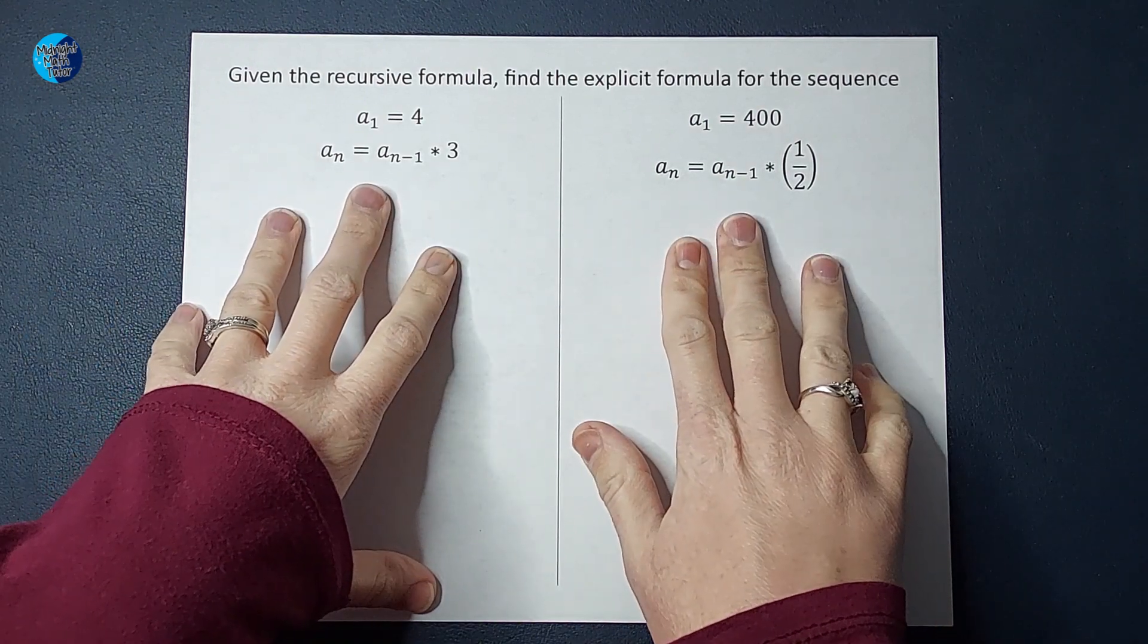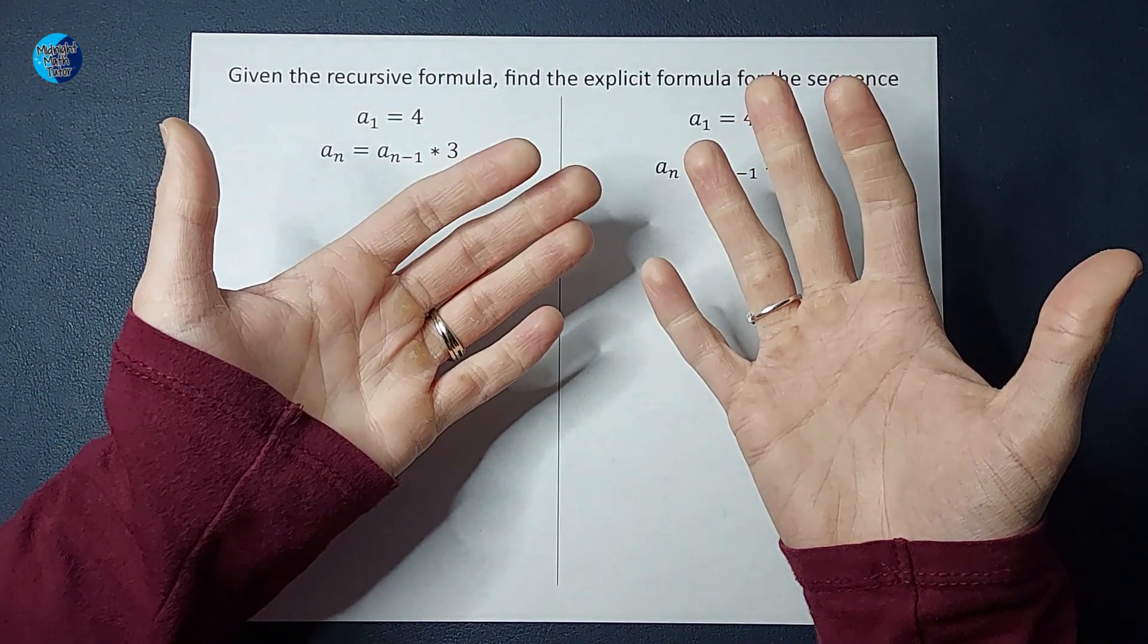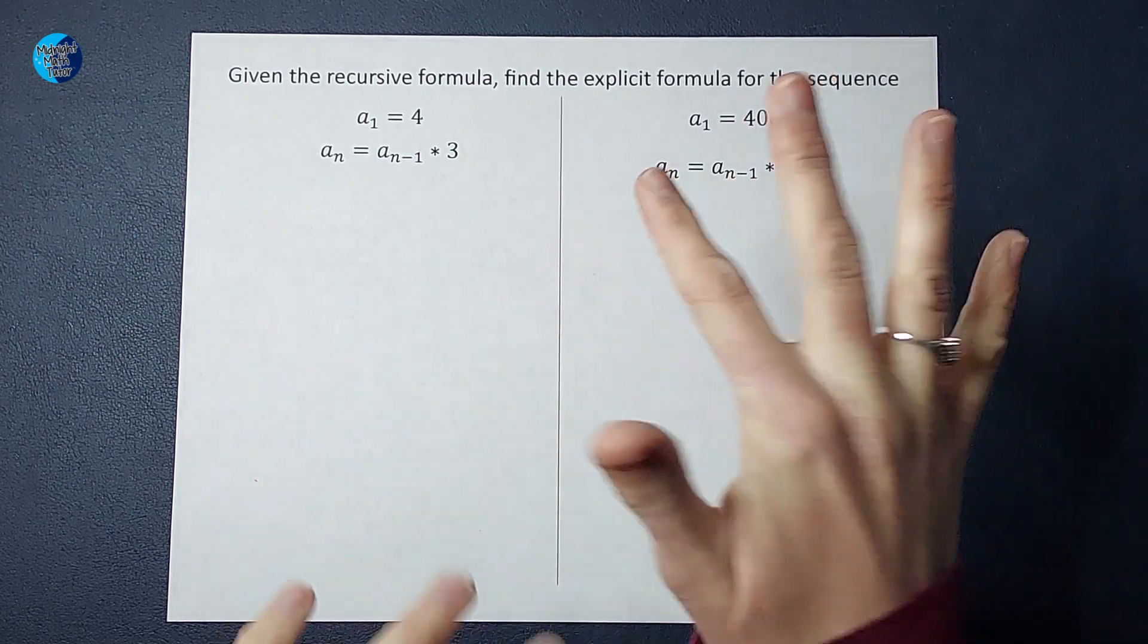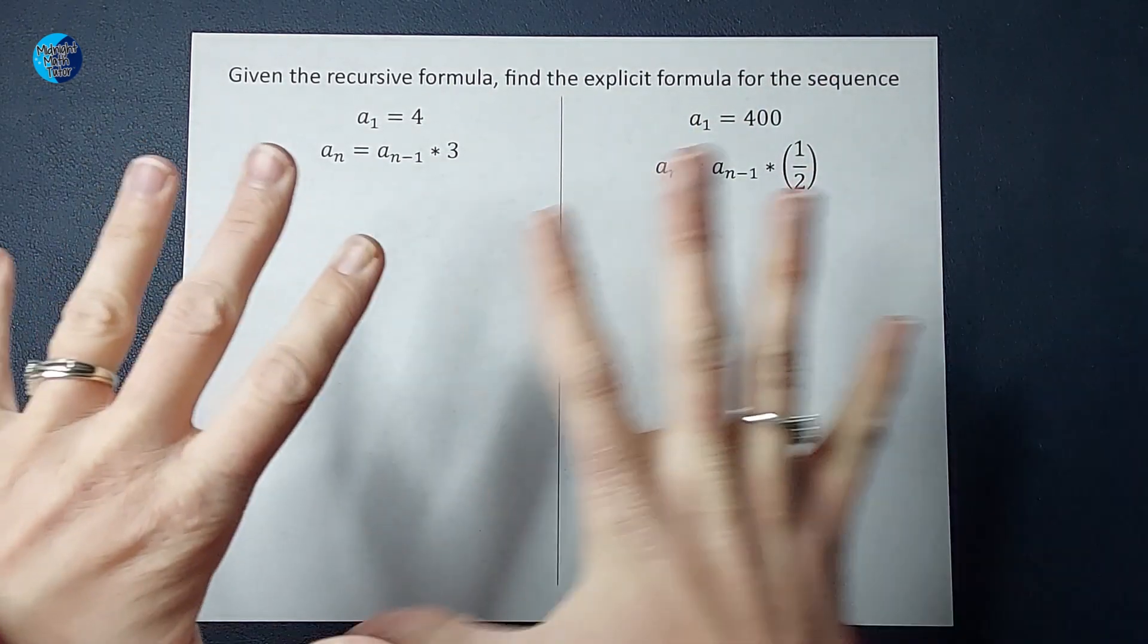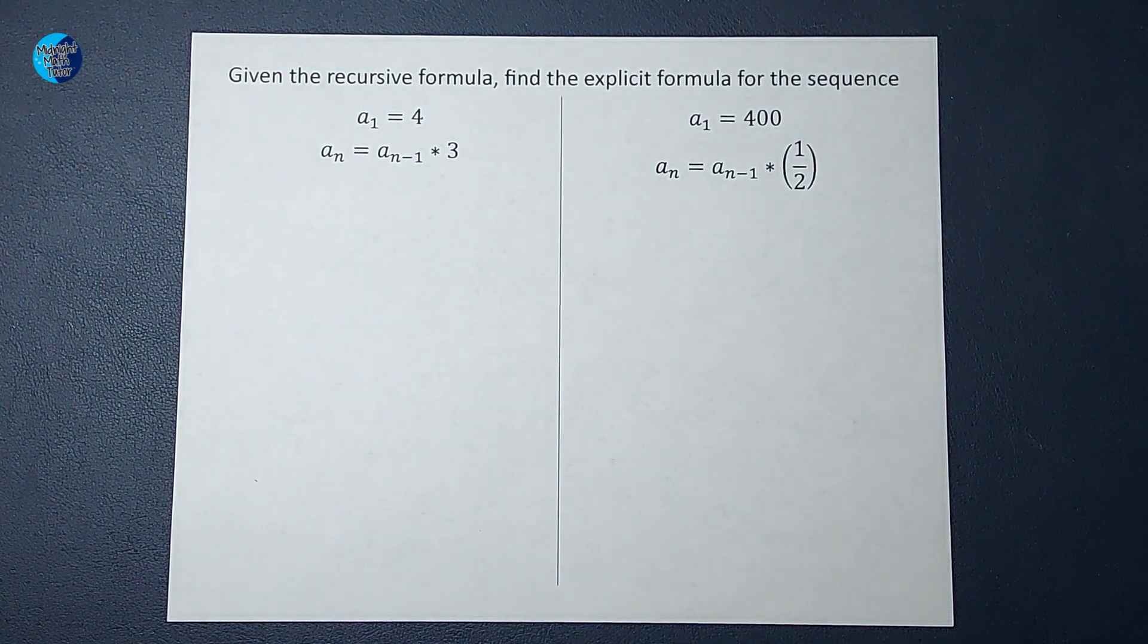Hey guys, we have been given two recursive formulas that apply to a sequence and we want to find the explicit formula for the same sequence in each of these cases.